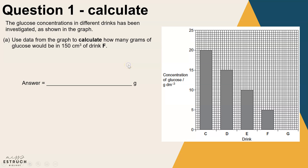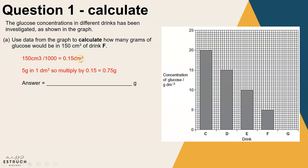The first step is converting the units. 150 centimetres cubed divided by 1000 gives us 0.15 decimetres cubed. The graph tells us how many grams there are in one decimetre cubed — for drink F that reads as 5 grams. So we multiply 5 grams by 0.15, giving us an answer of 0.75 grams.